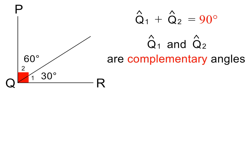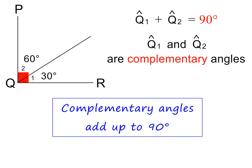Whenever angles add up to 90 degrees, we say that they are complementary angles. So remember: complementary angles add up to 90 degrees. Please pause if you need to.